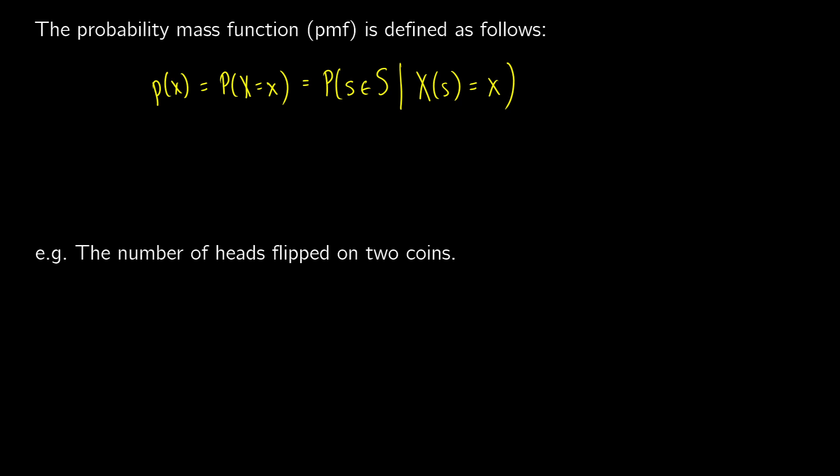We're going to introduce the probability mass function, or PMF, through an example. We're trying to calculate the number of heads flipped on two coins and we're going to find some probabilities associated with it.